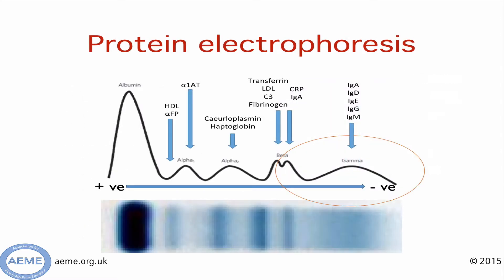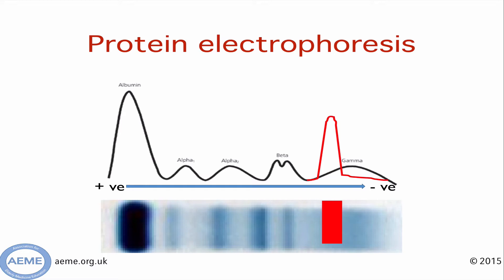When performing serum protein electrophoresis, the patient's serum is placed across an electrical current and proteins precipitate out depending on their size and electrical charge. There are various different zones in the electrophoresis, but the zone we are interested in is the gamma zone, which contains all of the immunoglobulins. Here is an example of a normal serum protein electrophoresis with a smooth diffuse gamma zone. Next is an example of an abnormal protein electrophoresis highlighted in red, with a spike in the gamma zone due to a plasma cell population producing an immunoglobulin of one size.